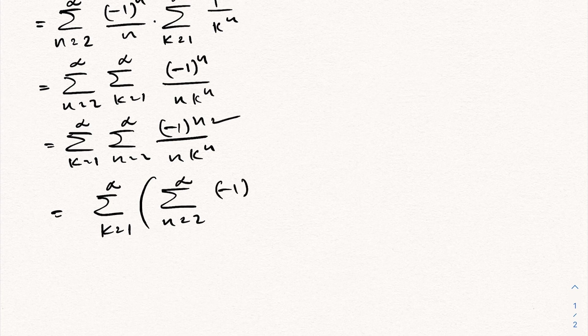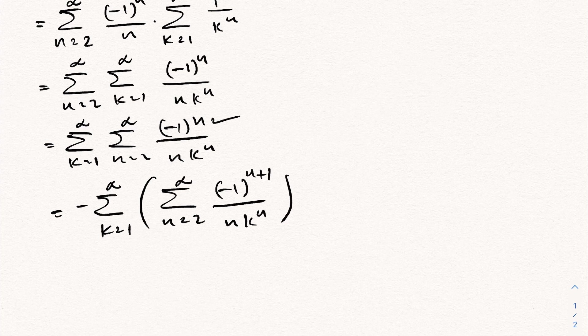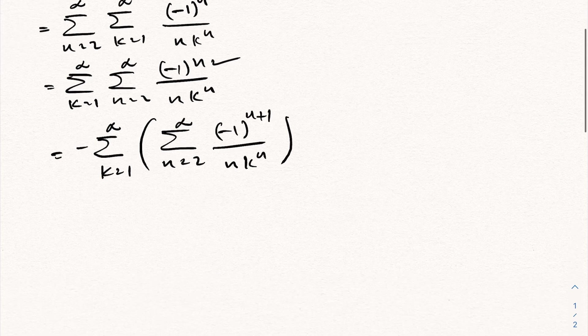Now I'm going to take the exponent as n plus 1 in the inner sum, so we should multiply by a minus sign, giving us minus 1 to the n plus 1, over n times k to the n.